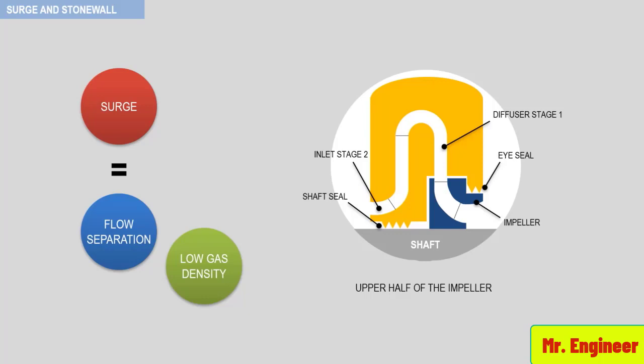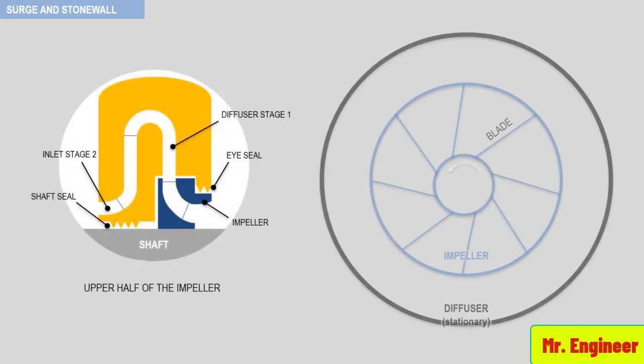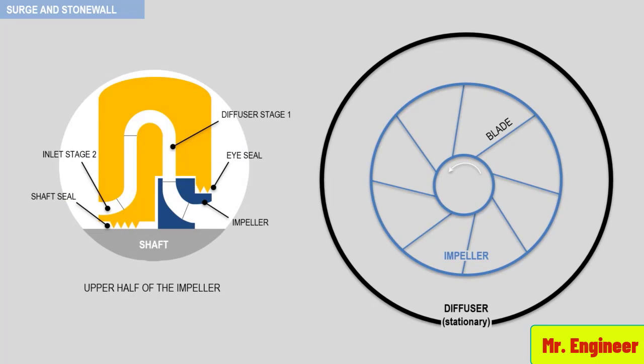An example of diffuser stall is shown here. This diagram depicts the view of a simple impeller with the side plate removed, and a vaneless diffuser.